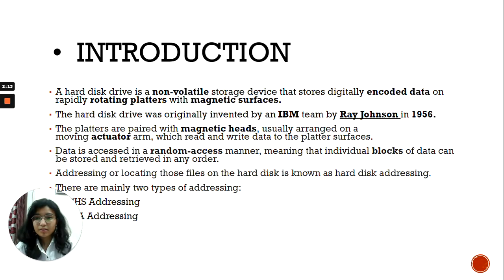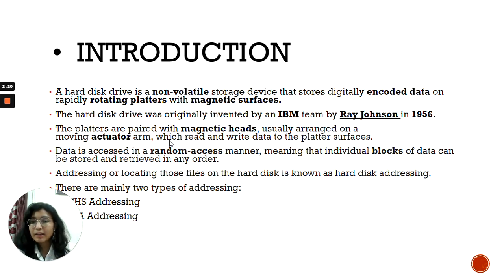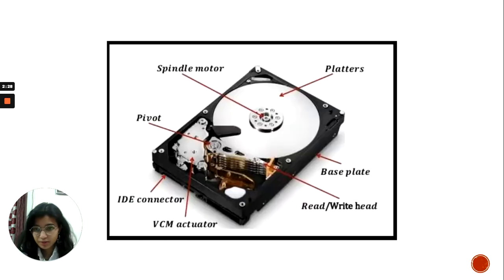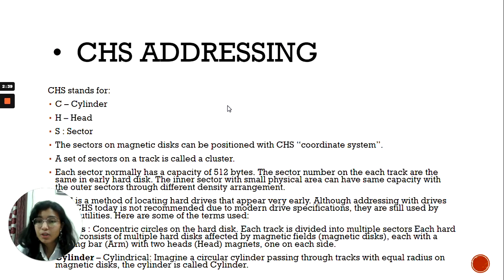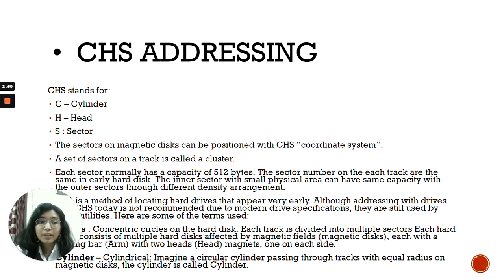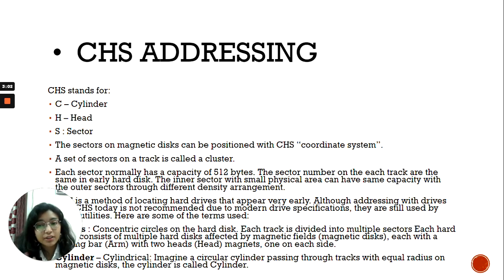The platters are paired with magnetic heads and the arm, and are usually arranged on a moving actuator arm, which reads and writes all the data on the platter surfaces. All your data is read and written on these platter surfaces and is also retrieved from those platter surfaces. Each sector has at least 512 bytes of capacity, and the sector number on each track are the same in early hard disks. The inner sector with small physical area can have the same capacity as the outer sector through different density arrangement.